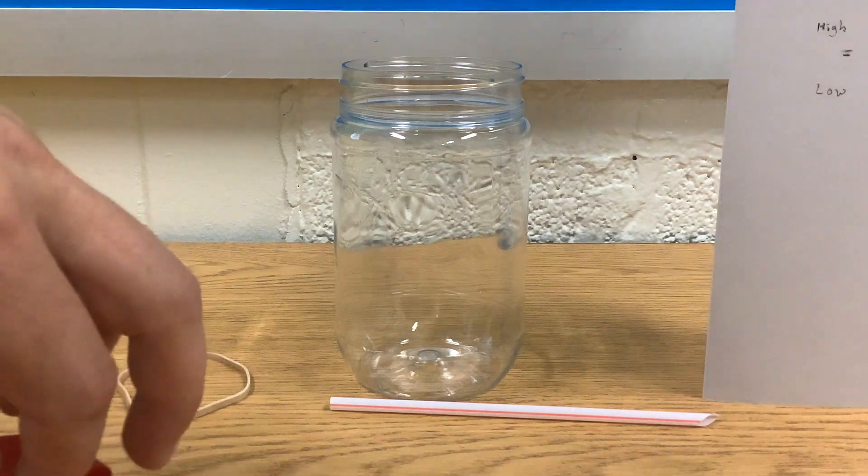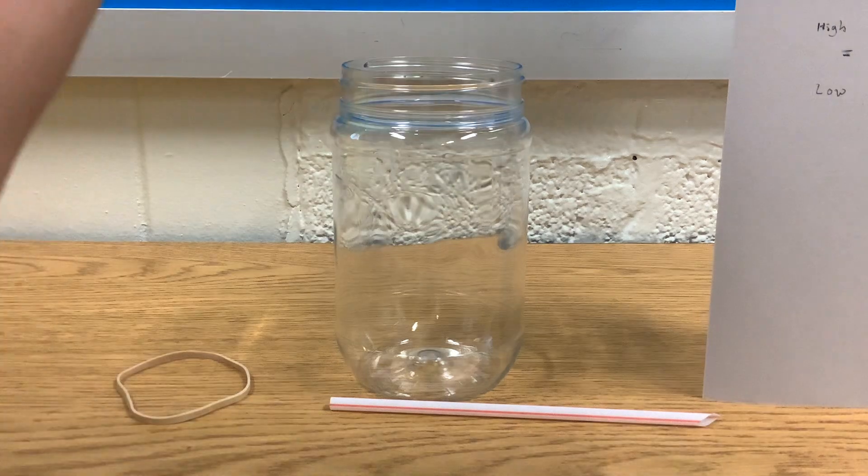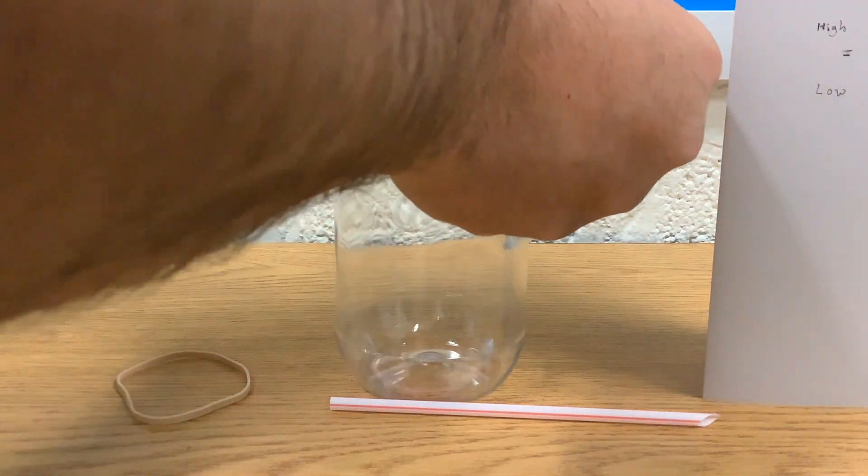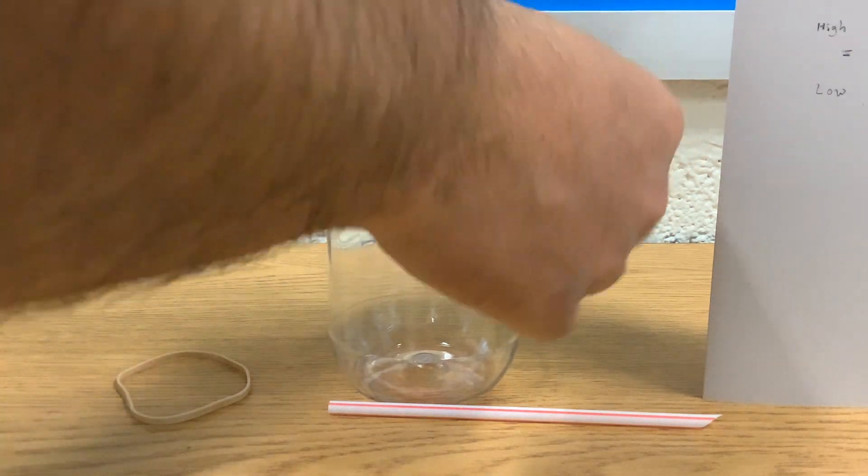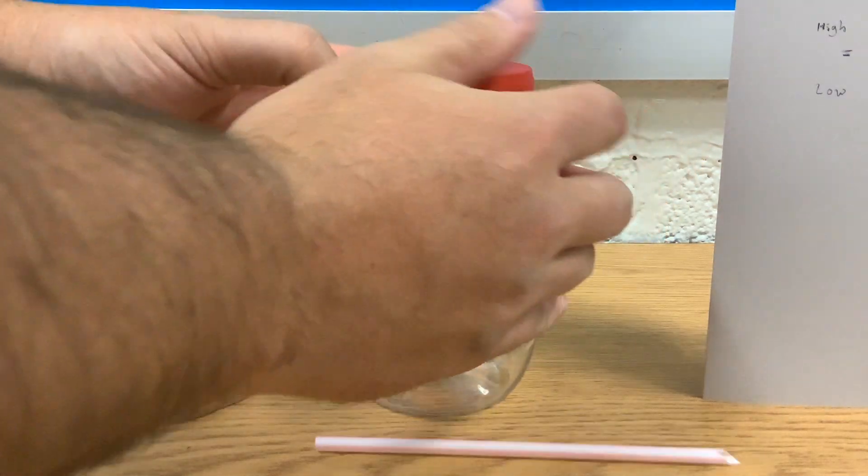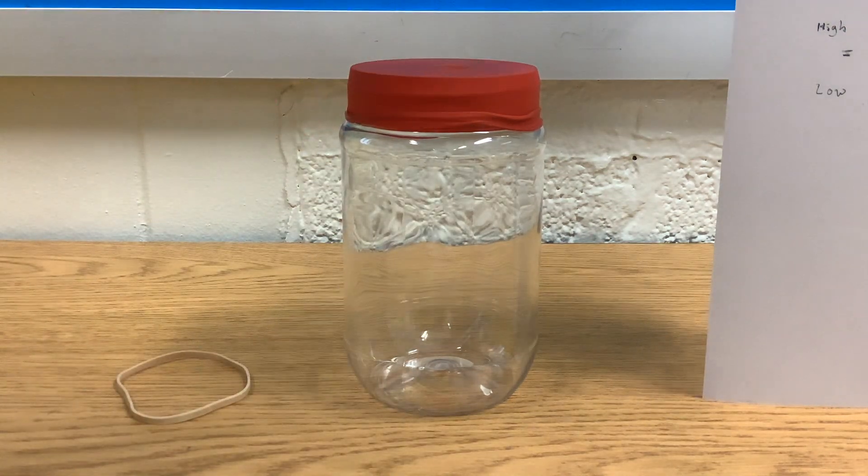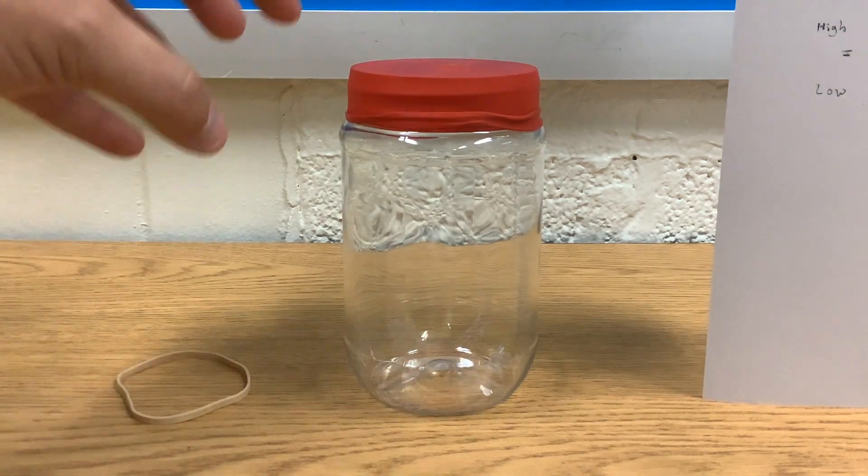We're going to take our balloon that we cut, and we're going to take it and stretch it over the top of our jar. So what this does is it traps the air inside the jar. So now we have a nice sealed jar. We have a certain pressure of air sealed in that jar.